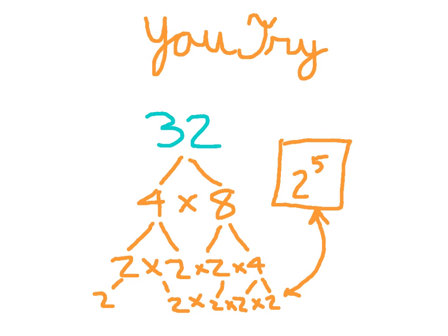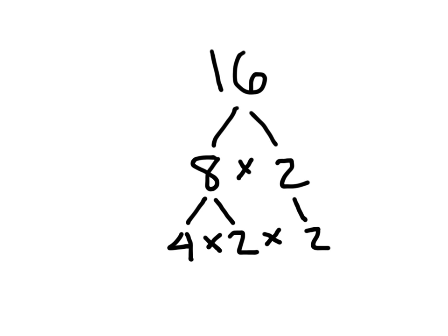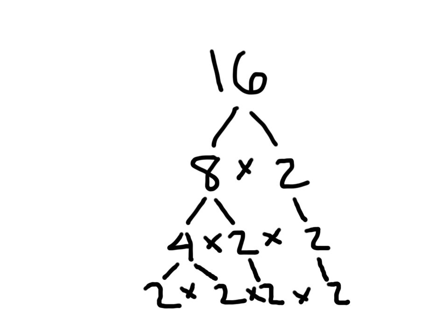Let me show that another way again. Starting with 16: 8 breaks down into 4 times 2, and if we bring this 2 down, we've still got 4, which breaks down into 2 times 2. Each level does equal 16. 2 times 2 is 4, times 2 is 8, times 2 is 16. So 2 times 2 times 2 times 2 is 16 — that's 2 to the 4th power. And that is what we call a factor tree, and 2 to the 4th is the prime factorization of 16.